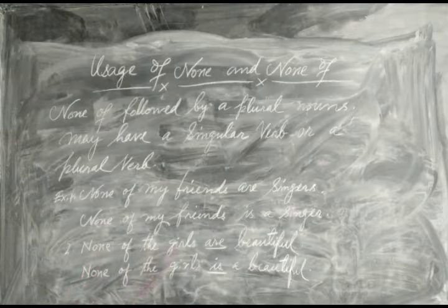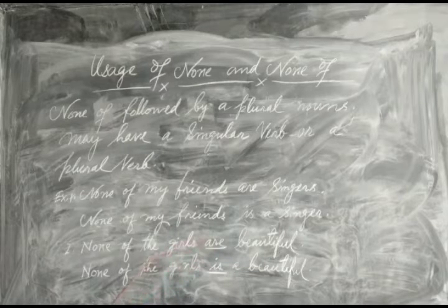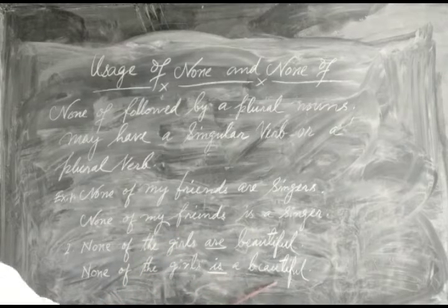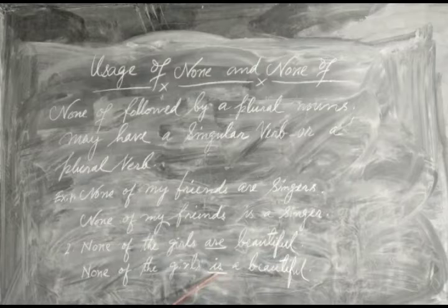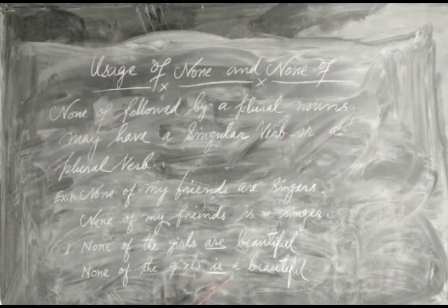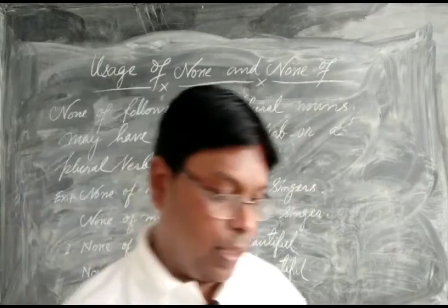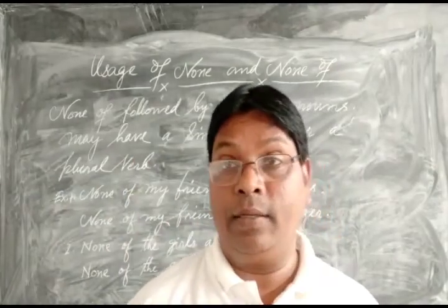Next example: 'None of the girls are beautiful.' And with singular understanding: 'None of the girls is a beautiful girl.' So 'is' refers to the singular 'girl.' The same rule applies here in that particular moment, particular sentence, using 'none of.'